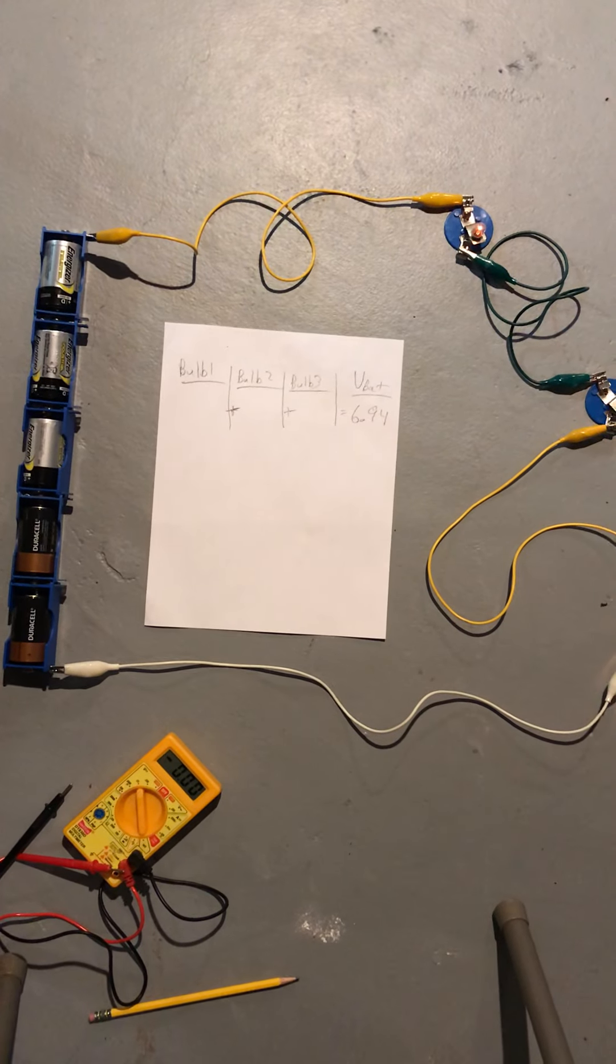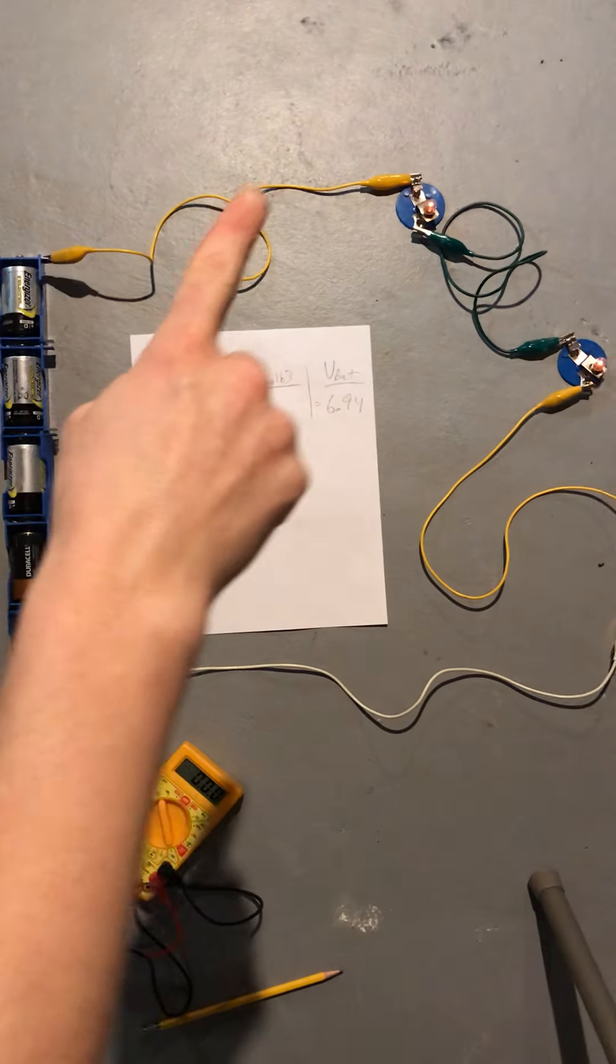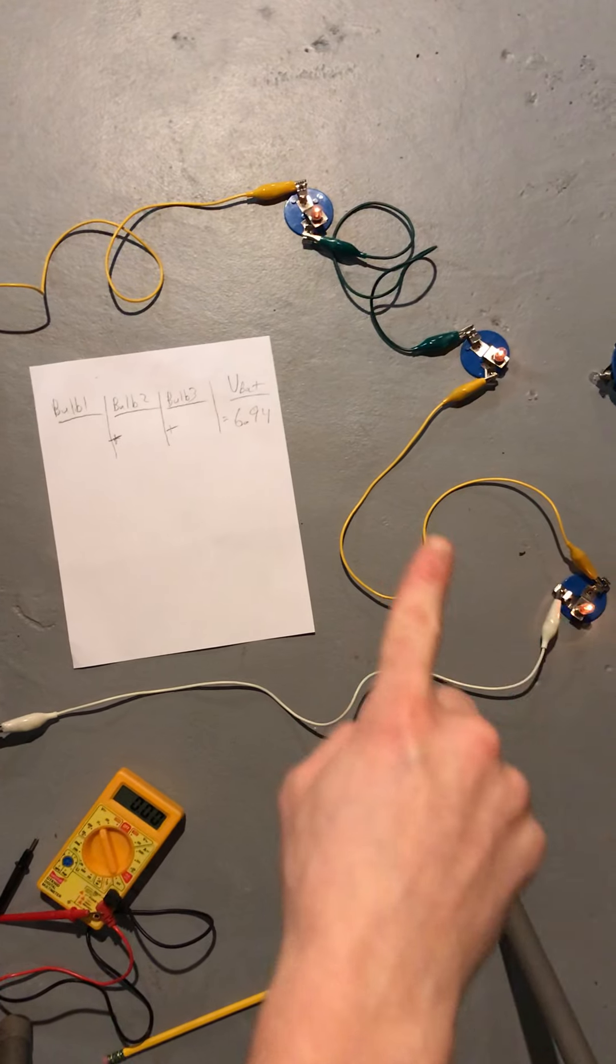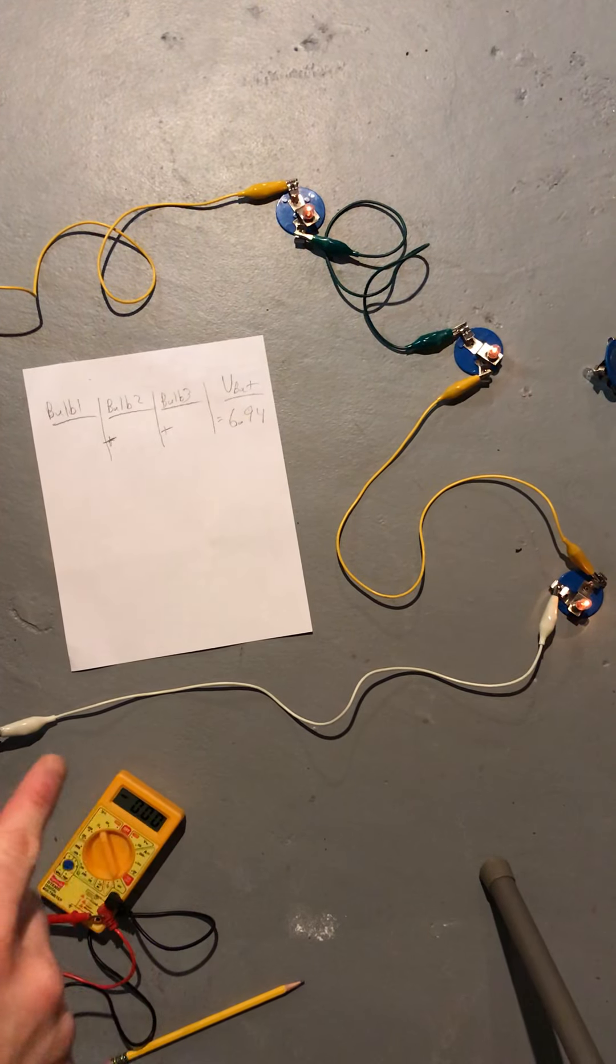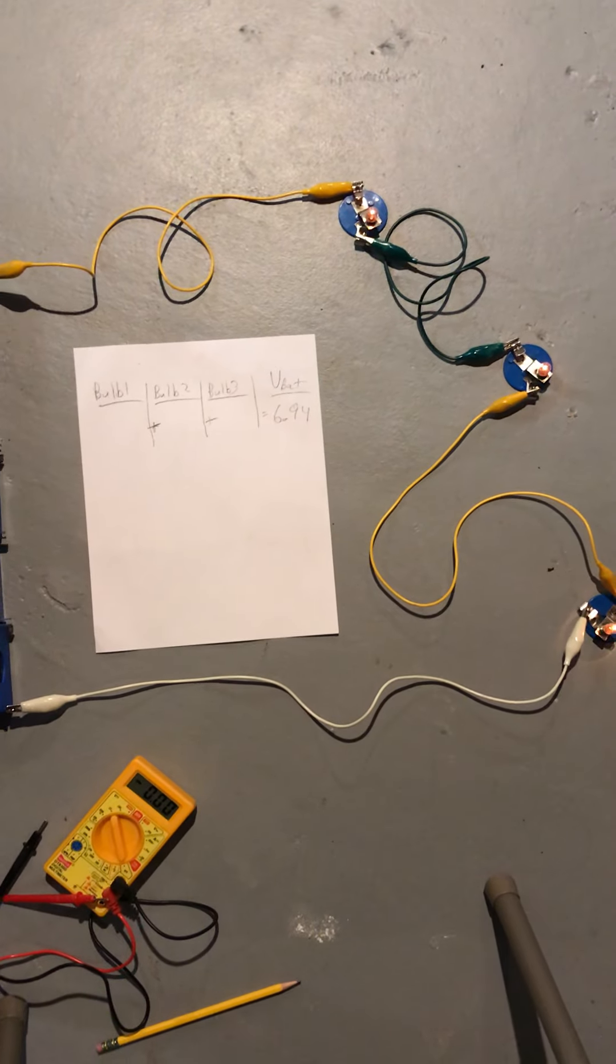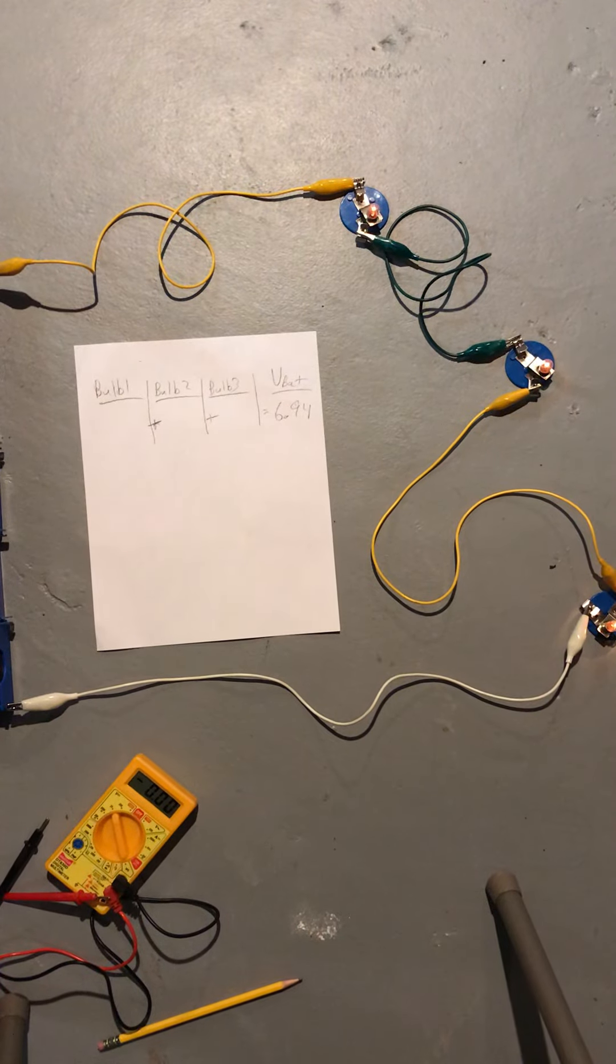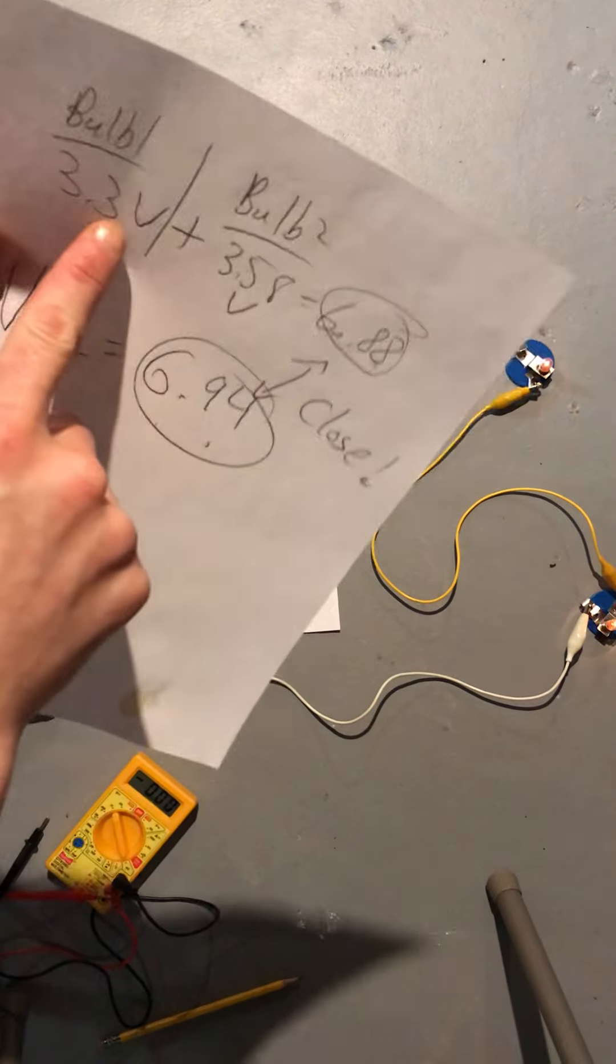Here is our same five batteries, but now we have a series circuit going to three bulbs and it's dimmer. I think that's because last time when we had two bulbs, each bulb got about 3.3 or 3.58 volts.